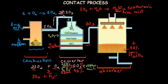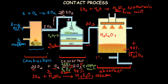Instead, sulfur trioxide is absorbed into 98% sulfuric acid, producing a thick liquid called oleum (H₂S₂O₇). Oleum is less dangerous than the mist formed by direct reaction with water. This oleum is then diluted with water to produce sulfuric acid whenever needed, giving 98% concentrated sulfuric acid as the final product.